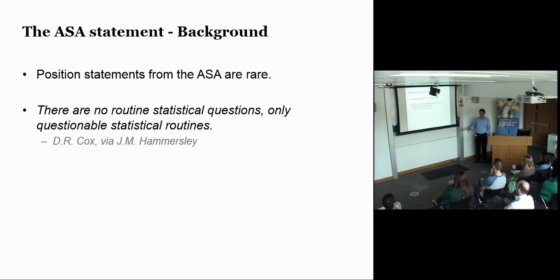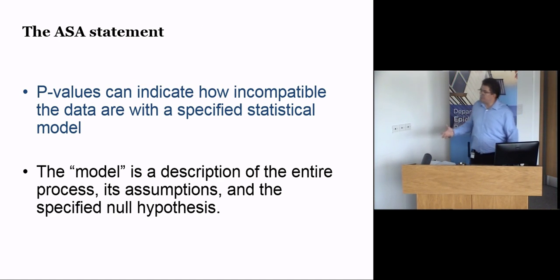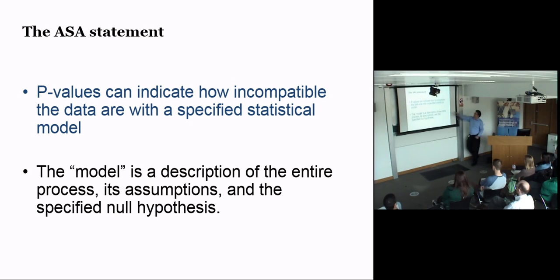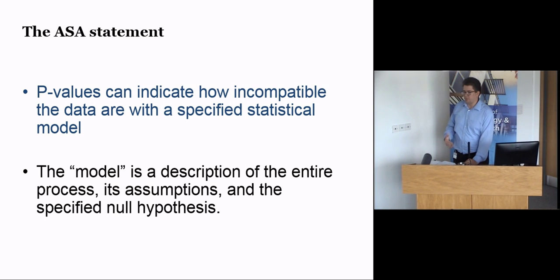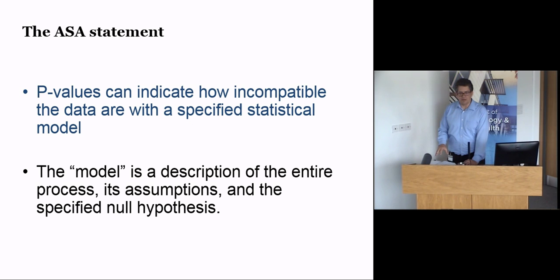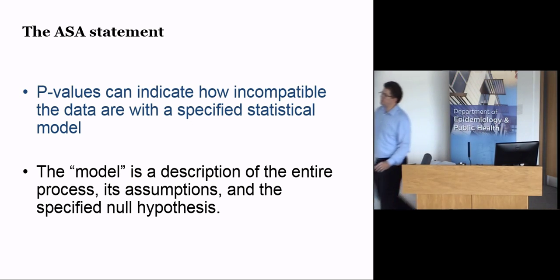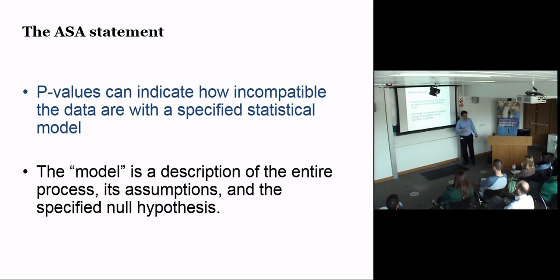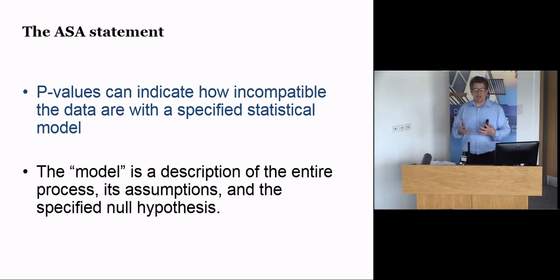One of my favorite quotes in statistics: 'There are no routine statistical questions, only questionable statistical routines.' There are no absolutes in analysis, no one procedure that will get you the right answer all the time. The first point from the ASA statement: a p-value is an indicator of how incompatible your data are with the statistical model. Importantly, the term 'model' describes the entire process — the assumptions and the null — so a significant result could reflect poor assumptions or a rejection of the null hypothesis.